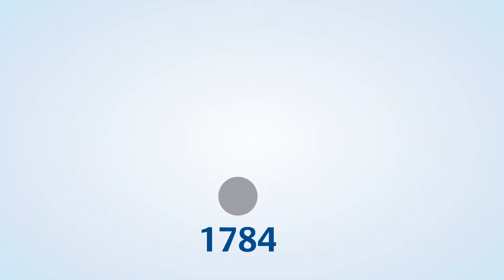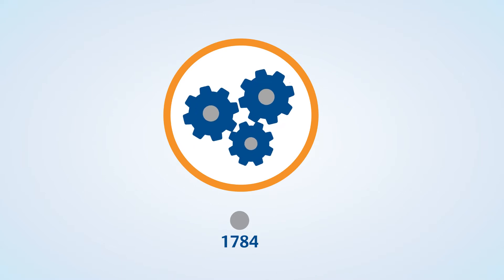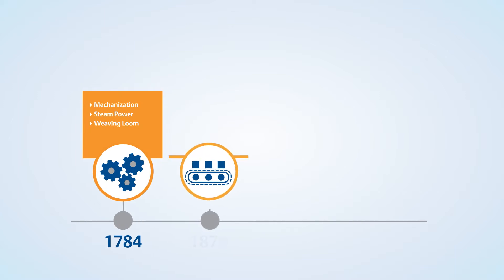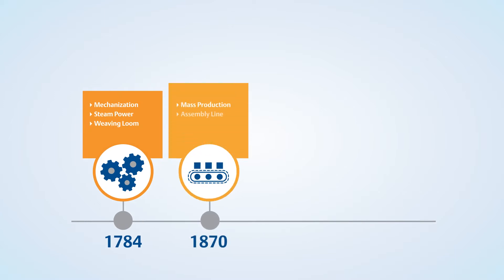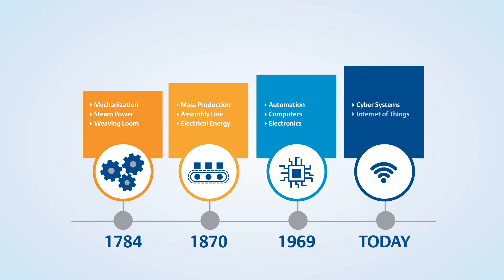Since the late 1700s, machines have evolved from their simple roots into the complex machine trains of today. Likewise, the cost to repair and replace these assets has grown exponentially. But as computer technology became more accessible and applicable to production, the idea that machine downtime could be predicted and thereby avoided began to emerge.